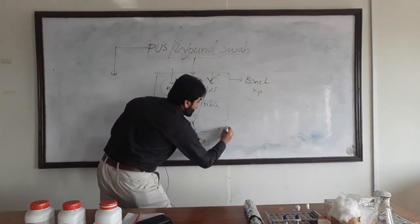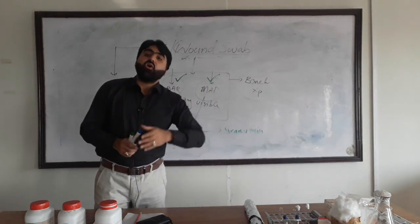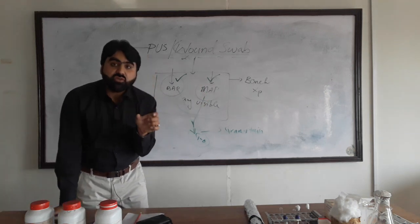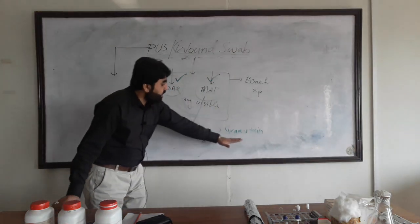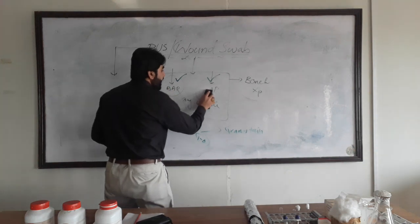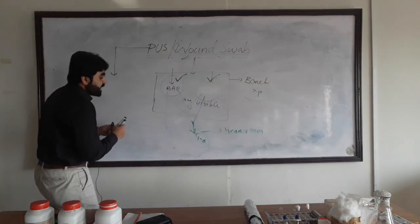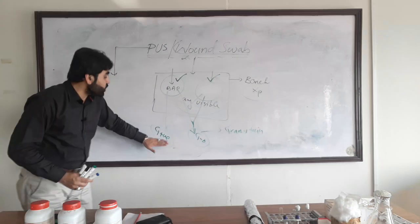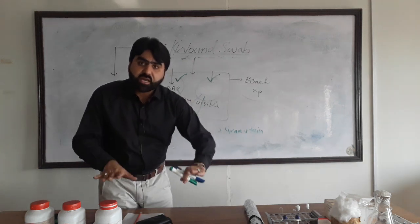We then perform gram stain to confirm the gram reaction of the grown pathogen. Before this, you must read the colony morphology very carefully, because colony morphology provides important clues in identifying the possible pathogen. If there is growth on blood agar but no growth on MacConkey agar, the possible pathogen is gram-positive bacteria — it grew on blood agar but not on MacConkey, which selects against gram-positives.